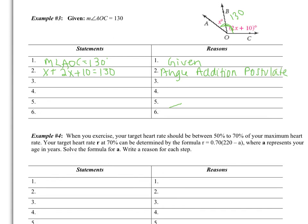So we are adding up two smaller angles to set them equal to the larger angle. I have X and I have 2X — that's 3X — and then I still have plus 10 equals 130. The reason is just called simplifying; all we did was combine like terms. Now we're ready to solve: subtract 10 from both sides. Subtracting 10 from the left side, I'm just left with 3X. Subtracting 10 from the right side, I'm left with 120. So that was the subtraction property of equality.